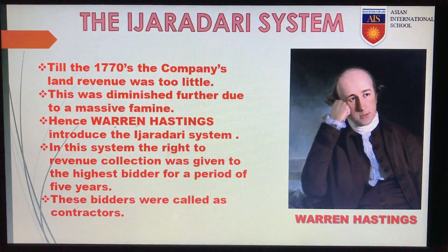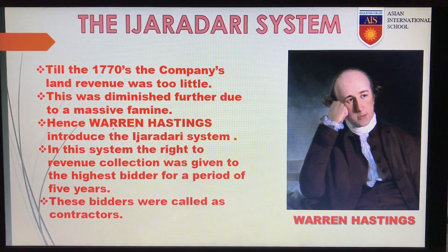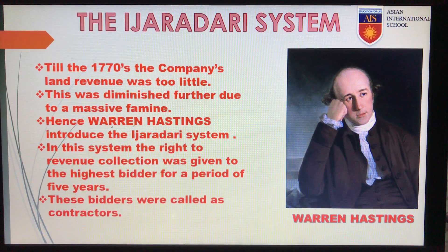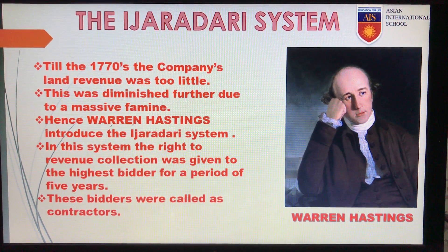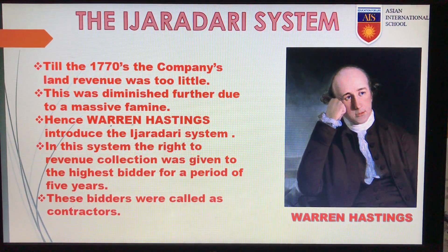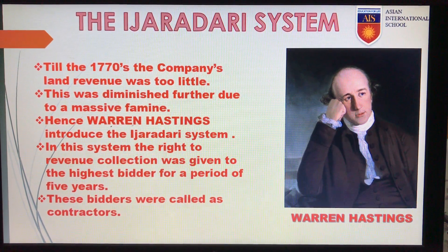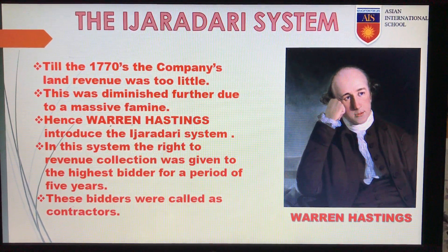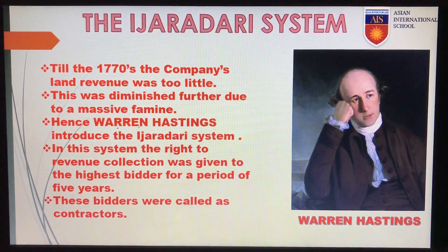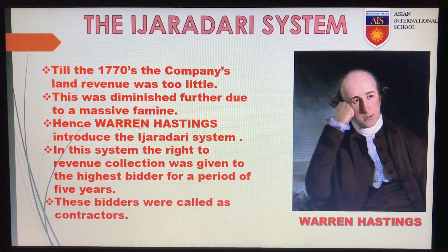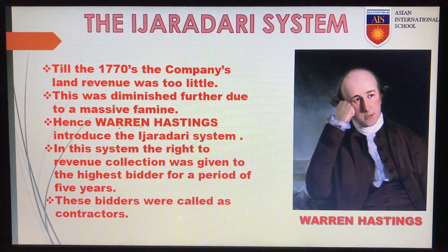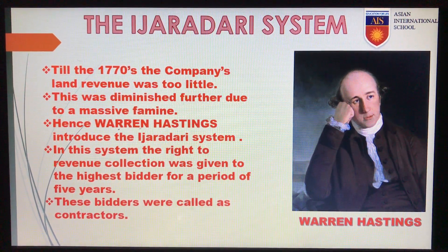The first system that we would be talking about is the Ijadadari system. Till the 1770s, the company's land revenue was very little, and this was further diminished due to a massive famine. Hence, Warren Hastings introduced the Ijadadari system. In this system, the right to revenue collection was given to the highest bidder for a period of five years.